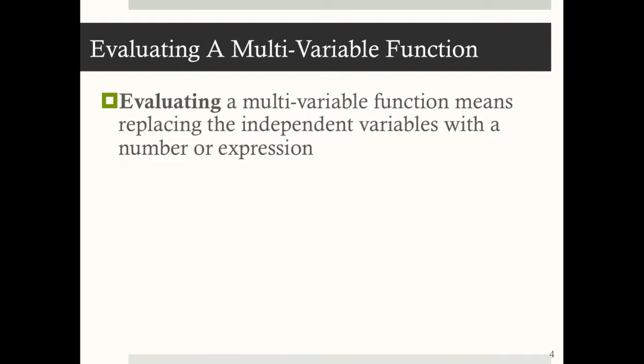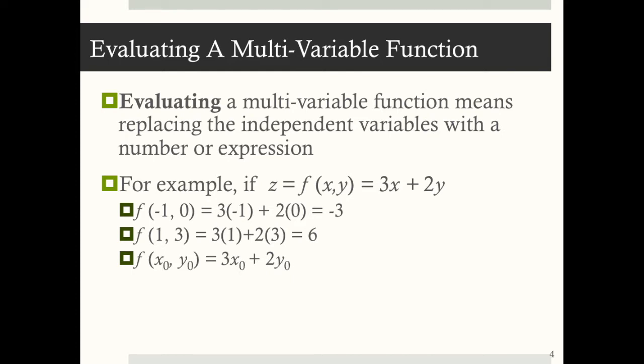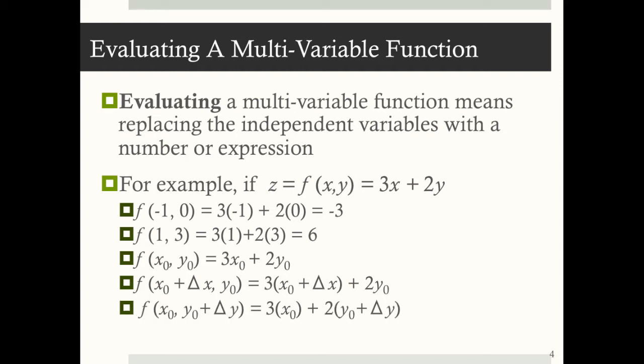Evaluating a multivariable function means replacing all of the independent variables with a number or expression. For example, if z equals f of x and y, which equals 3x plus 2y, then f(-1, 0) means substitute negative 1 in for x and 0 in for y, which yields negative 3. f(1, 3) means replace x with 1 and y with 3. We can also evaluate functions at expressions such as x₀, y₀, or x₀ plus the change in x.